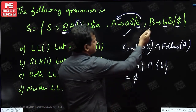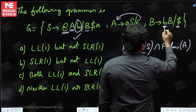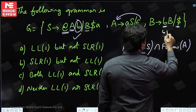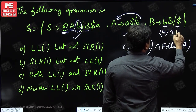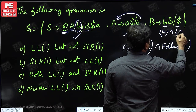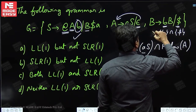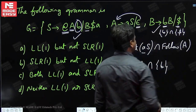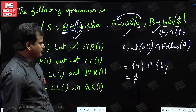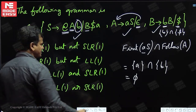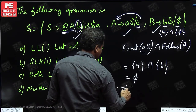For B's productions: B derives B and B derives dollar. First of (B) is {B} and first of (dollar) is {dollar}. B intersection dollar is empty. This is also valid. So the grammar is LL(1) — we do not have any conflicts.